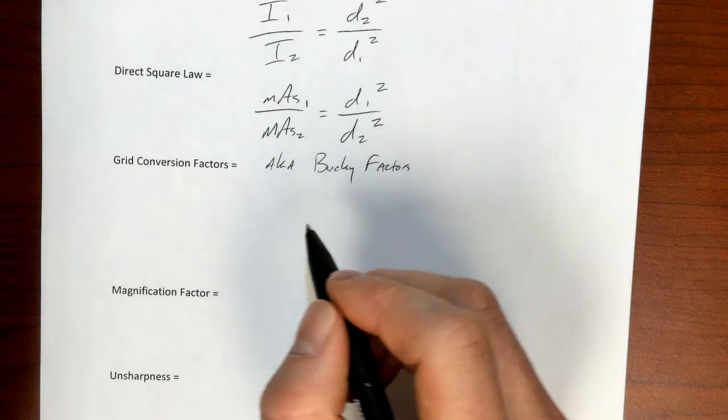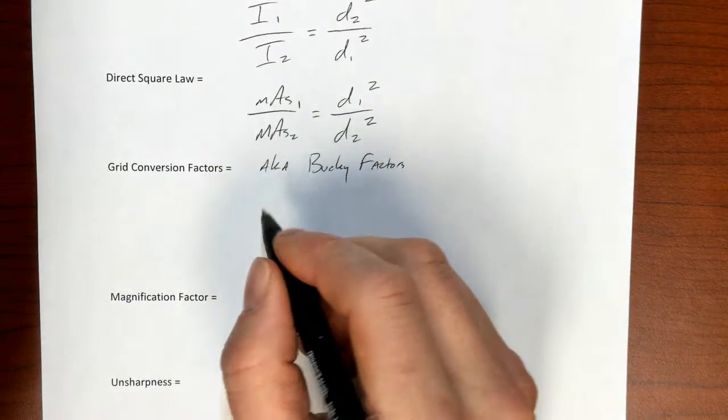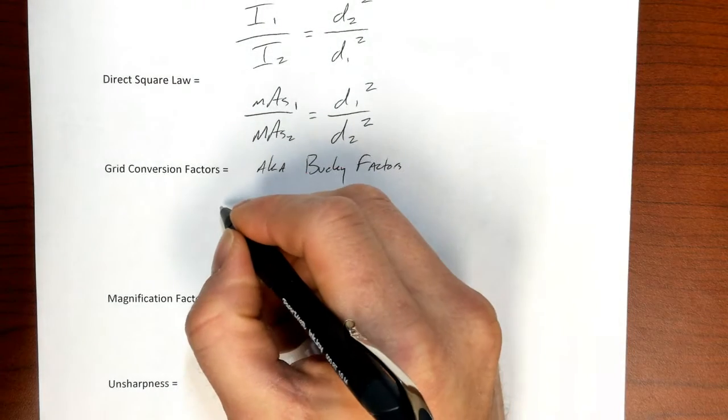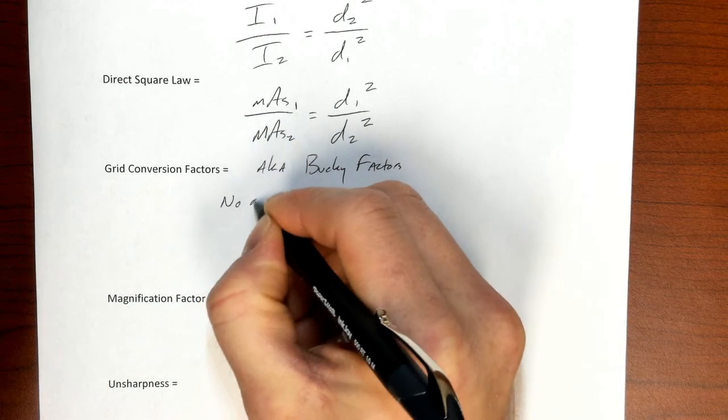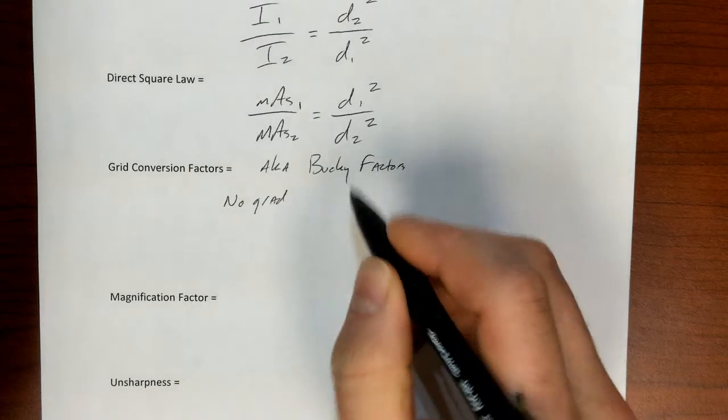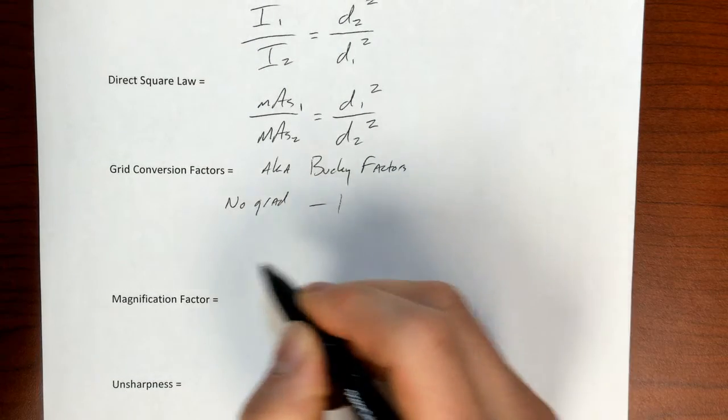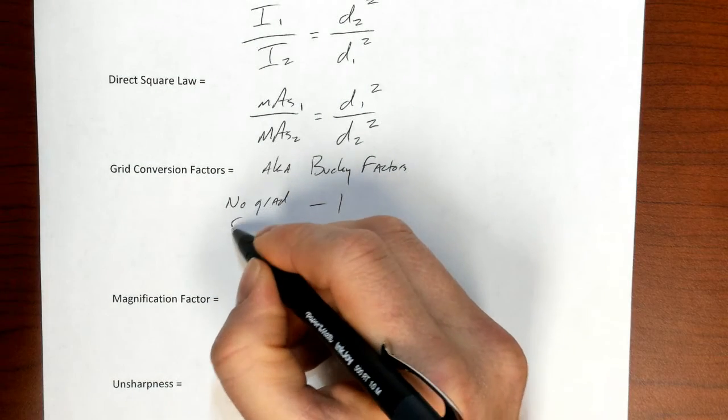Grids are used to clean up contrast and get rid of scatter radiation. In all likelihood, they will go away in the next 5, 10 years, and we will use software algorithms to correct for scatter on the image. But for right now, we're using grids to clean up. And if we're not using a grid, then we'll have a Bucky factor of 1.